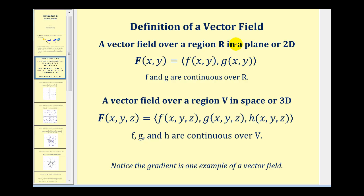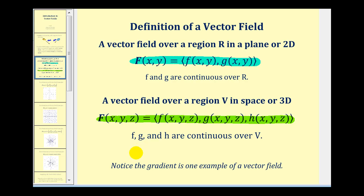Let's take a look at a formal definition of a vector field. A vector field over a region R in the plane (two dimensions) is given as F(x, y), where the x-component is a function of x and y, and the y-component is also a function of x and y, with f and g continuous over region R. For three dimensions, the vector field has three components given by f, g, and h as functions of x, y, and z, all continuous over the three-dimensional region or space V.